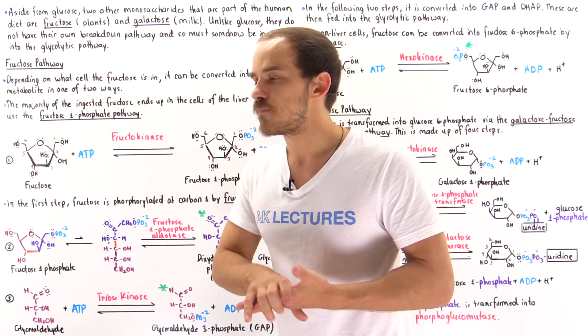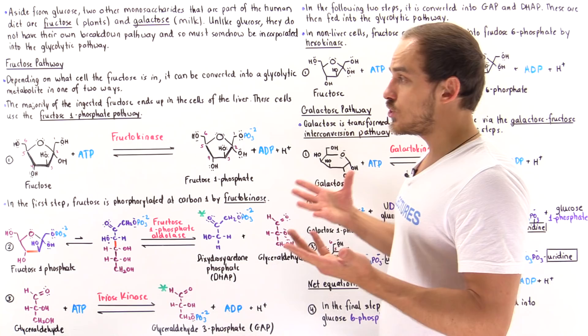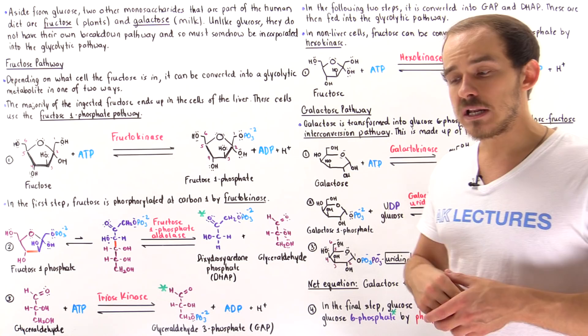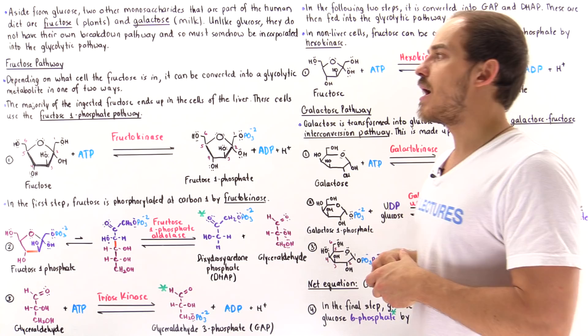The fructose 1-phosphate pathway consists of three individual steps. Ultimately, what we want to do in this pathway is transform a fructose molecule into dihydroxyacetone phosphate and glyceraldehyde 3-phosphate, because these are the two molecules that are glycolytic metabolites. So we can feed them directly into the glycolytic pathway to form ATP molecules.